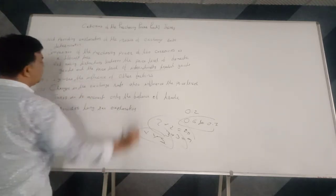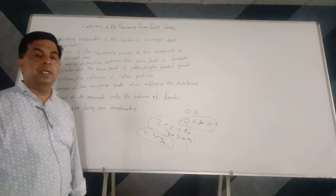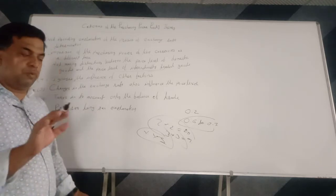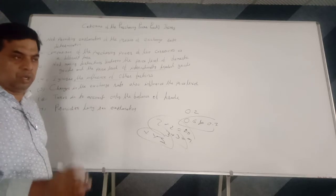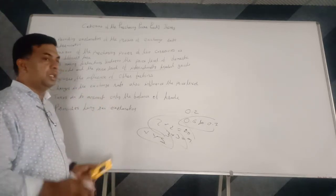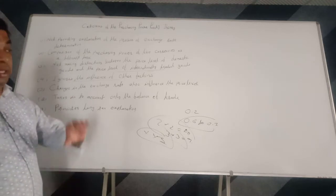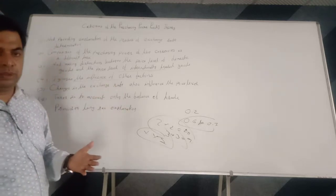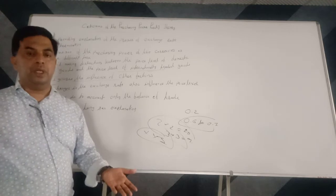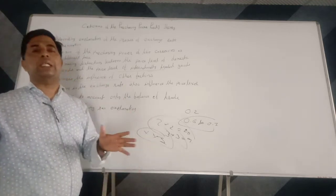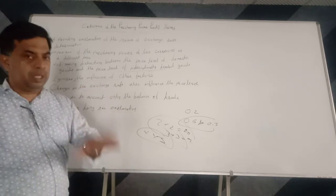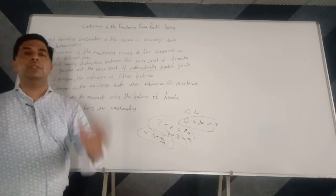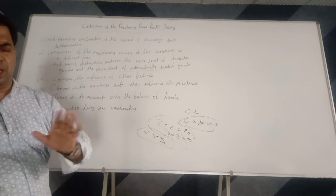Fourth criticism: the theory ignores the influence of other factors. While purchasing power is an important determinant of exchange rate, the theory ignores many other factors — particularly demand for and supply of currency, as well as changes in income, changes in tastes, preferences and habits of consumers, transportation costs, and tariffs. The theory has not provided any explanation regarding these factors and confines itself only to purchasing power.